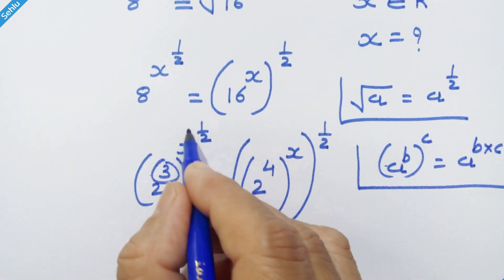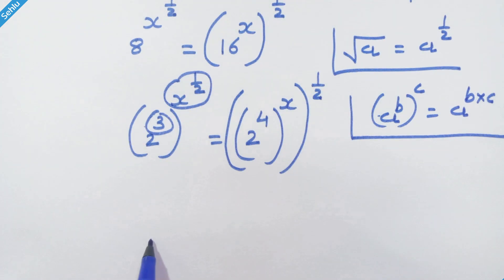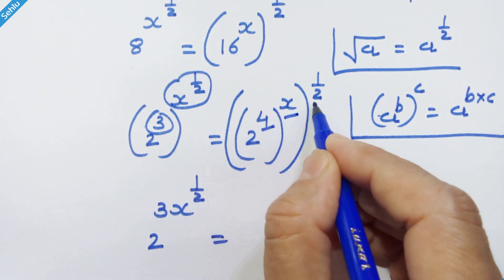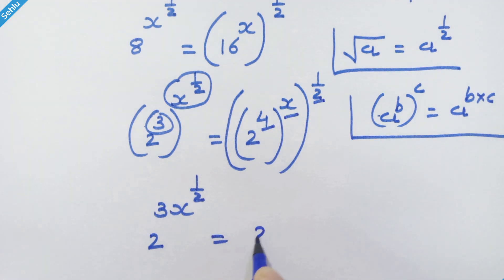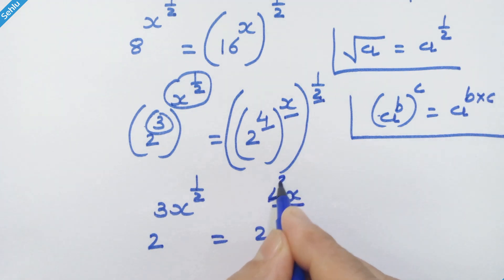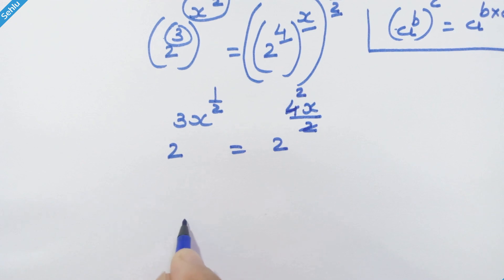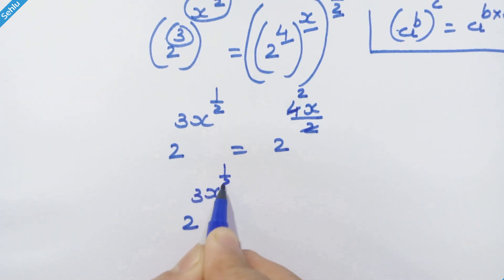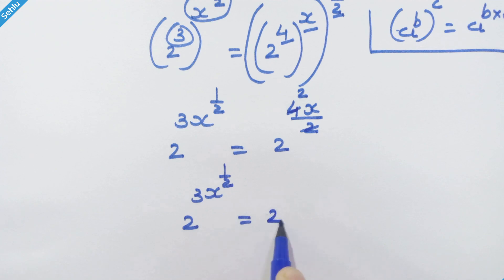So here we can multiply the exponents: 2 raised to (3x raised to 1/2) is equal to — and here we can multiply: 2 raised to (4x upon 2). Since 4/2 = 2, we have 2 raised to (3x raised to 1/2) is equal to 2 raised to 2x.